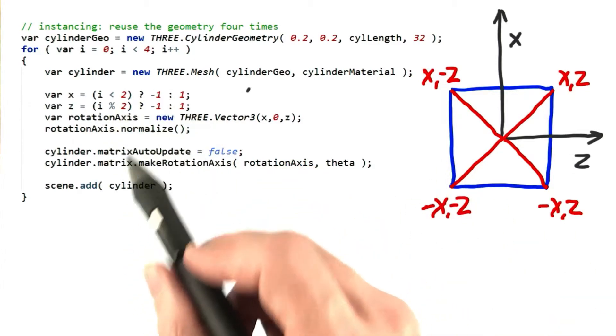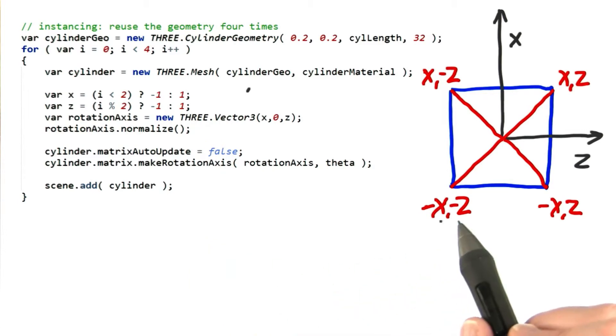So that's what this tricky code does here. It gives me negative X, negative Z on the first iteration, negative X, Z on the next, and so on.